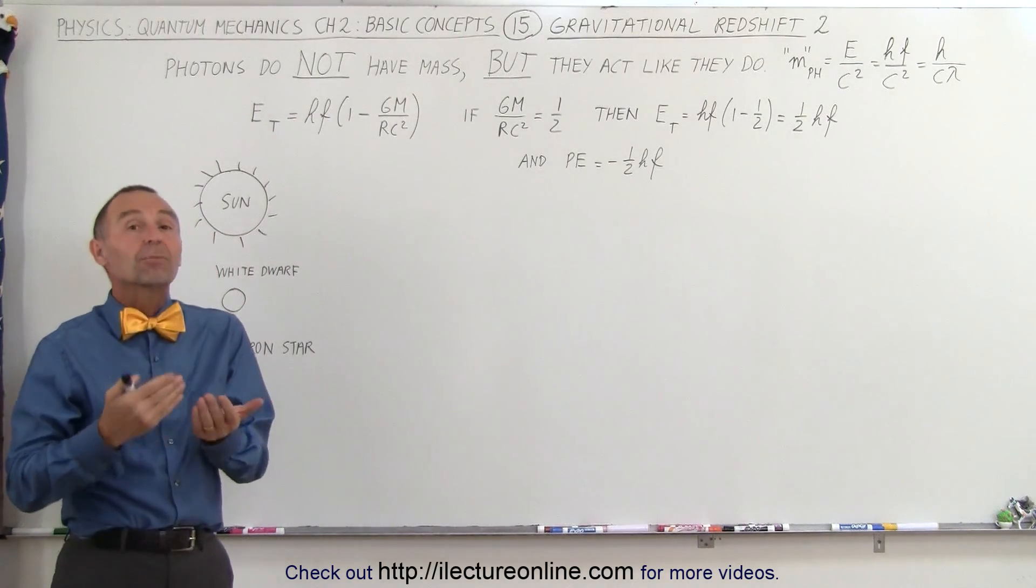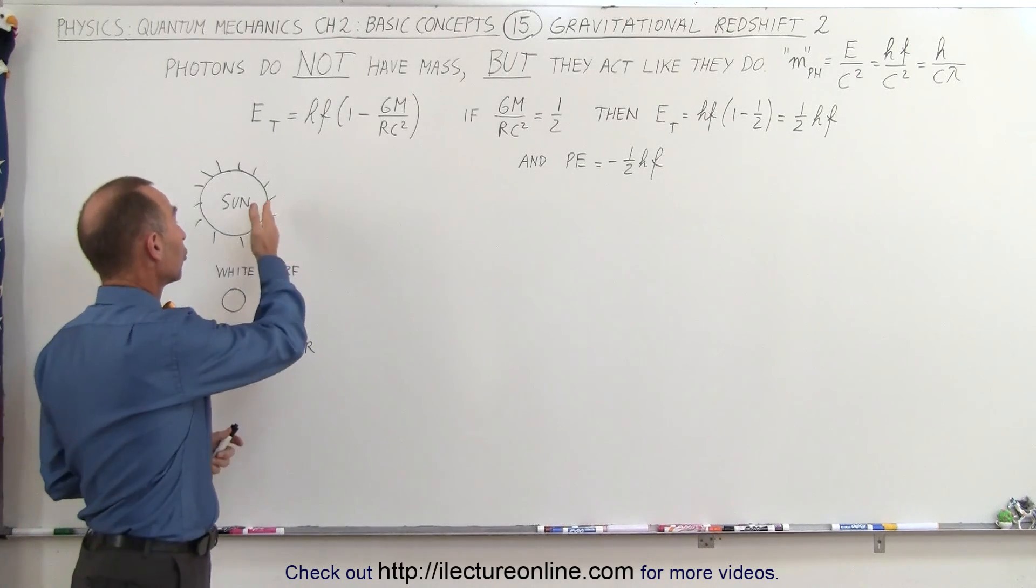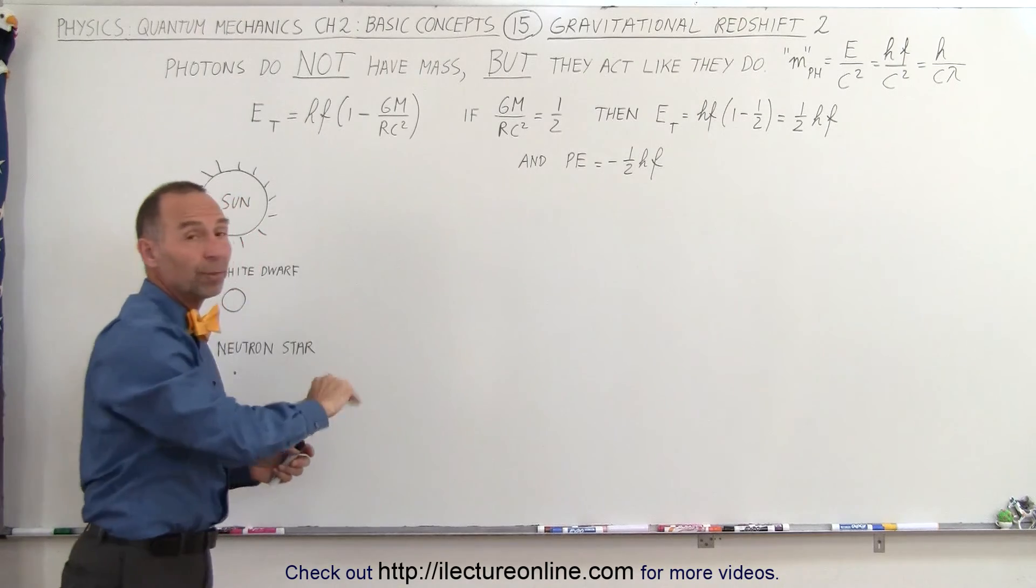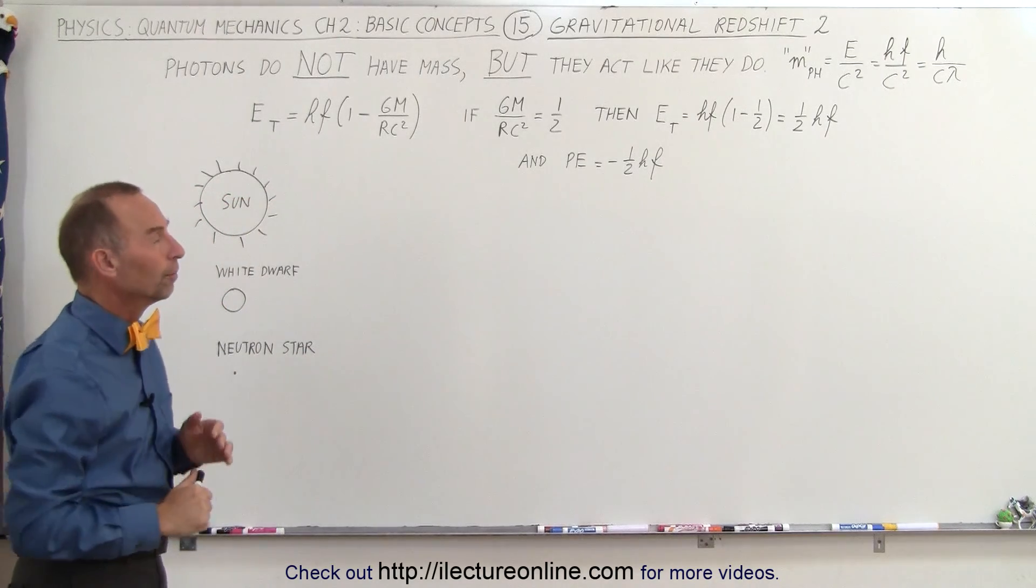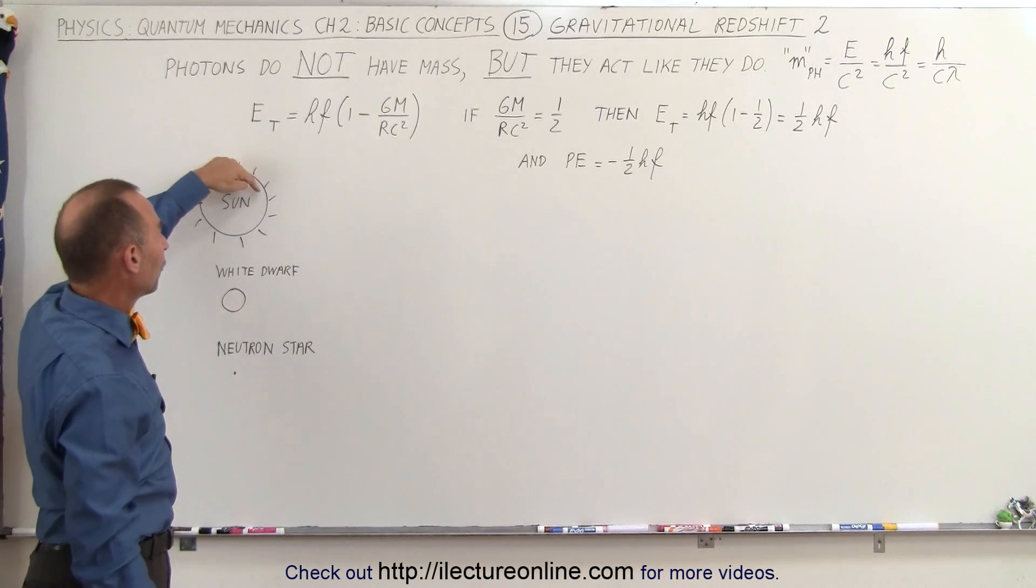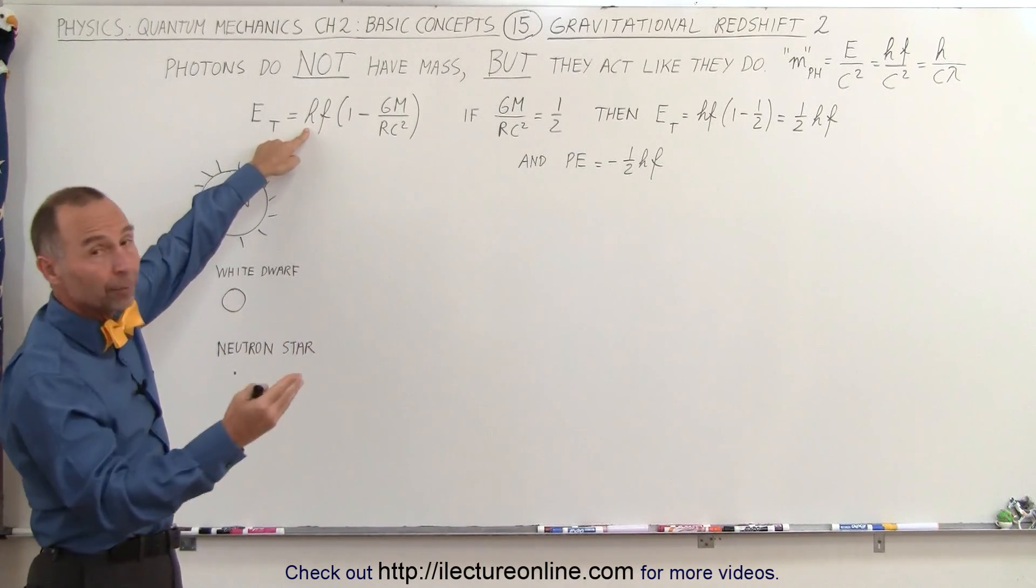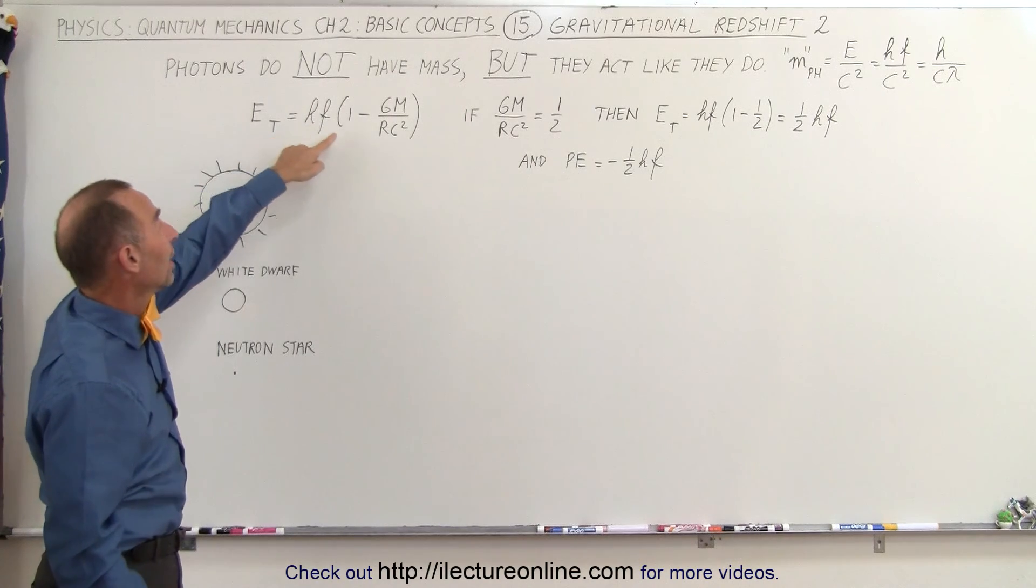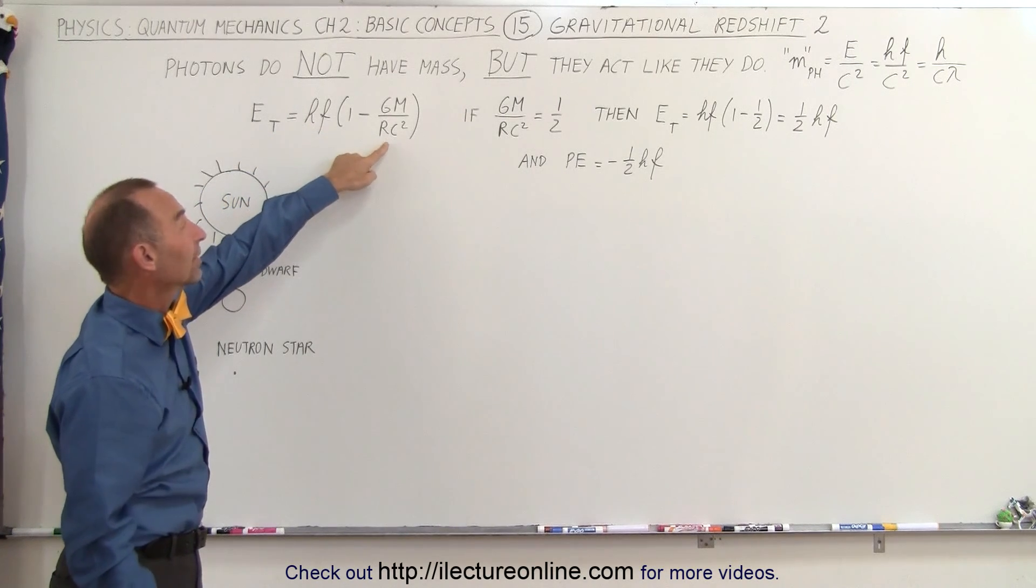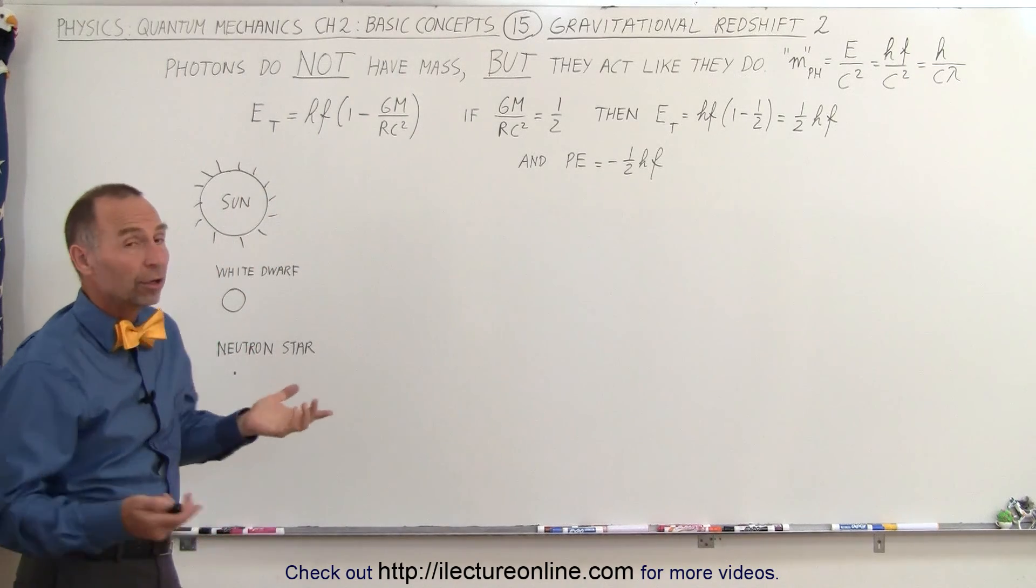In each case it must overcome the potential energy difference between being on the surface and being free out in space away from the gravitational pull. The total energy of a photon at the surface is HF, the energy in space, times one minus the potential energy at the surface of the star.